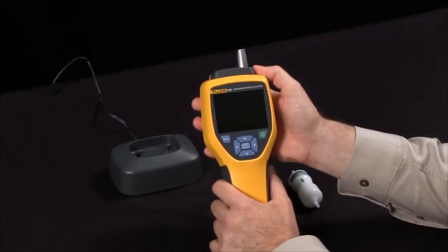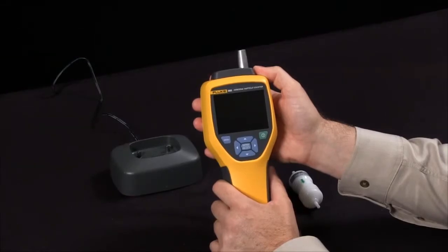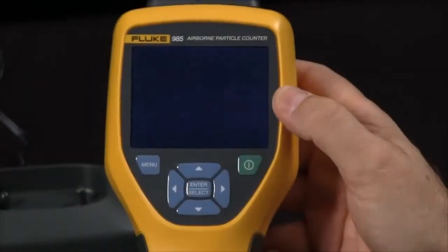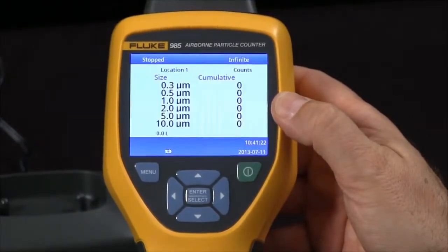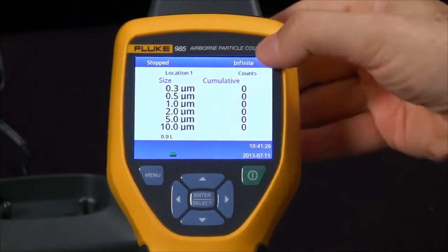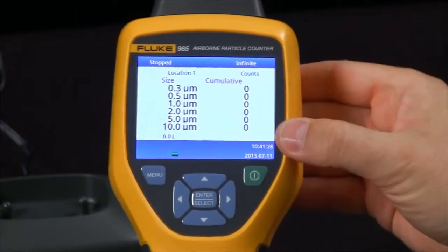How do I take measurements with the Fluke 985 airborne particle counter? Simply power on the device and your home screen will show you that we are sampling particulates in six different sizes, everything from 0.3 micron up to 10 micron.